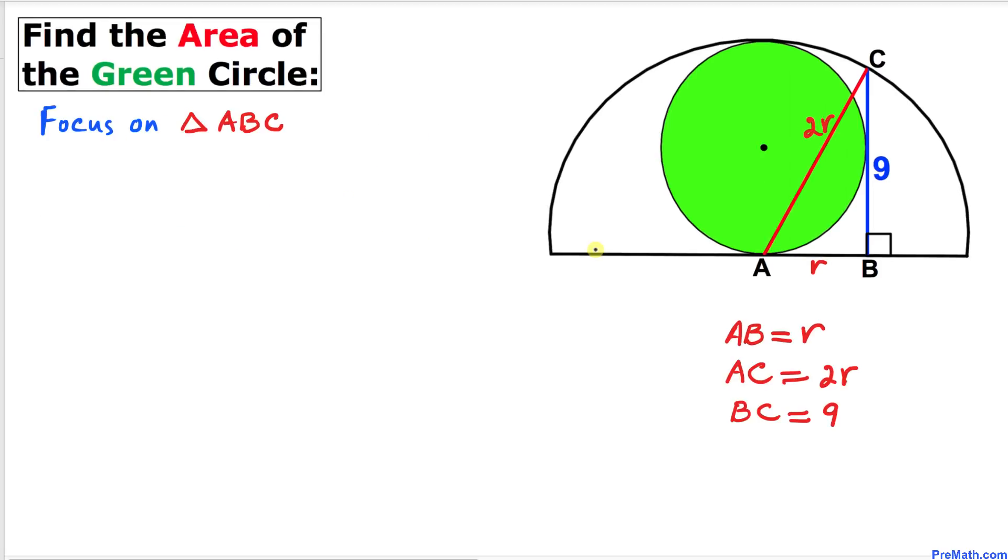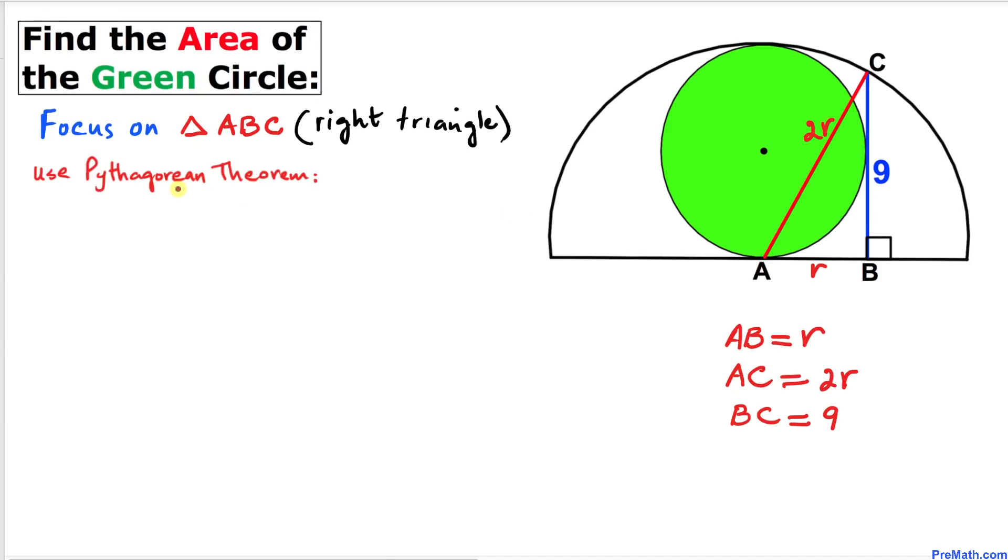Now let's focus on this triangle ABC. Since this is a right triangle, we are going to use the Pythagorean theorem. Here's the Pythagorean theorem: a² + b² = c².